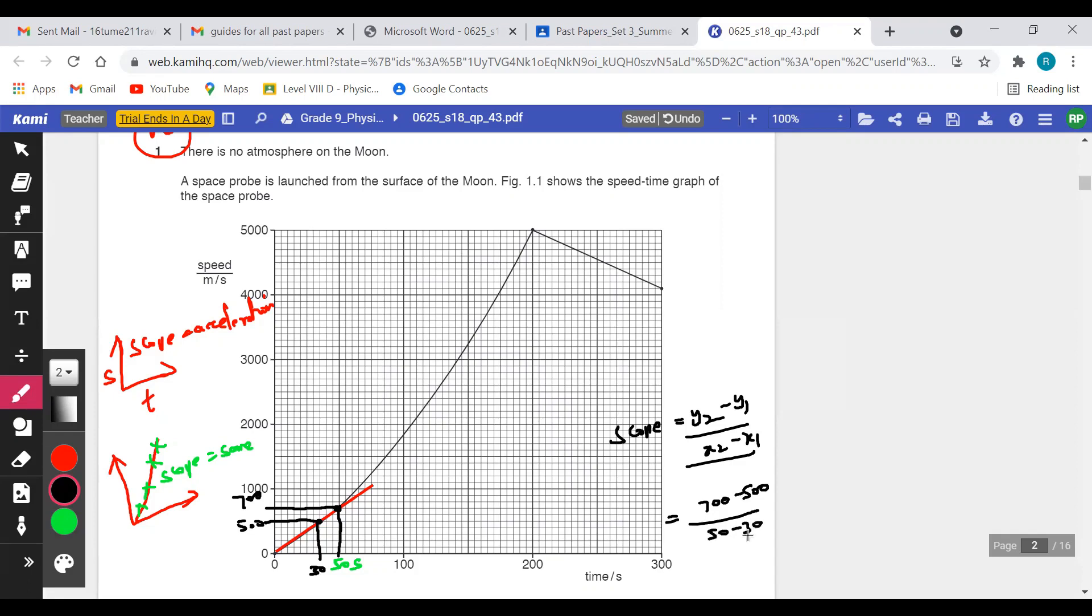50 minus - sorry it's 35, not 45, 40, 35. So 50 minus 35, please be careful with the points. So it will be 200 by 15. When you try to simplify it, 200 by 15...